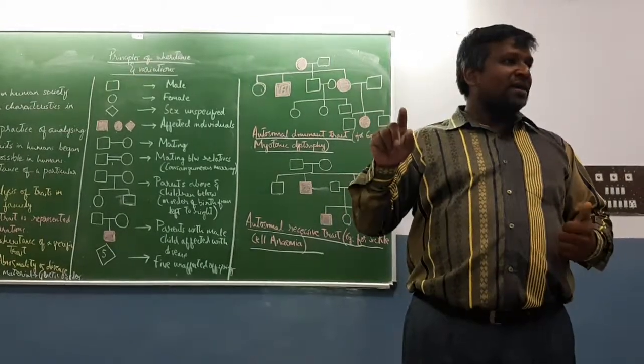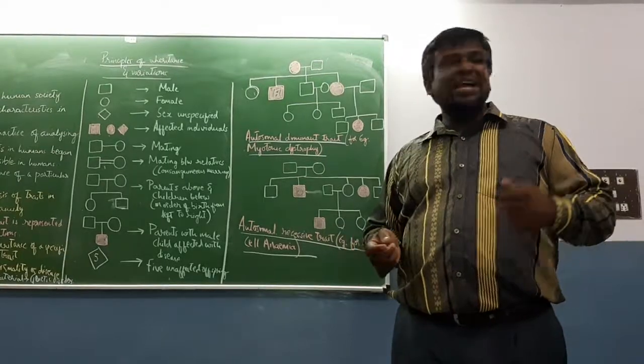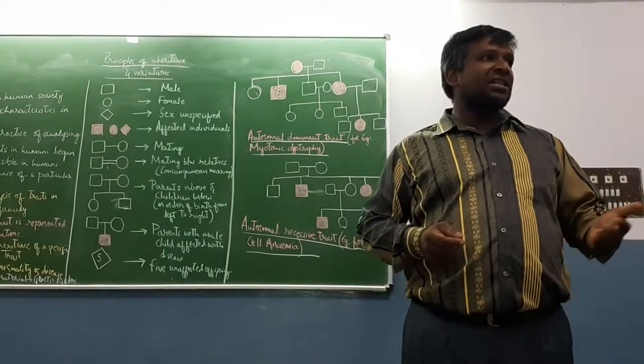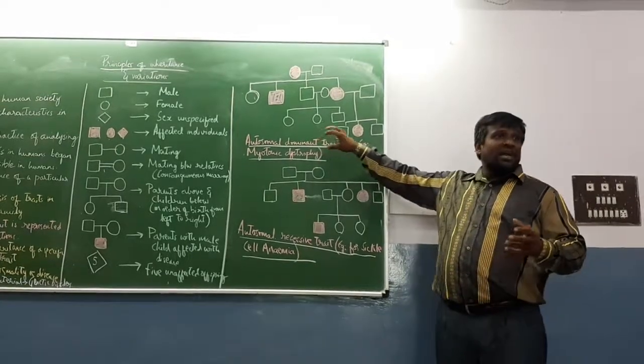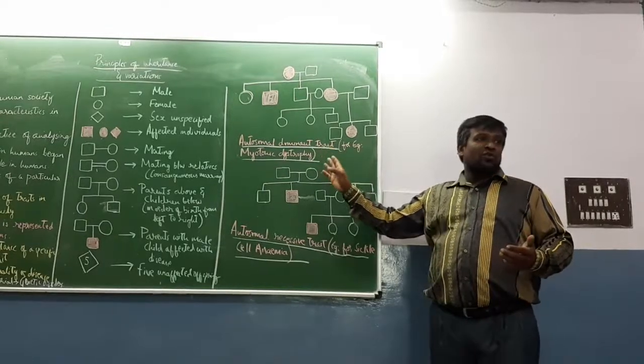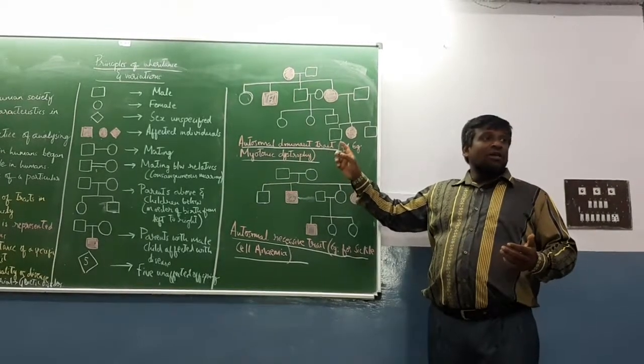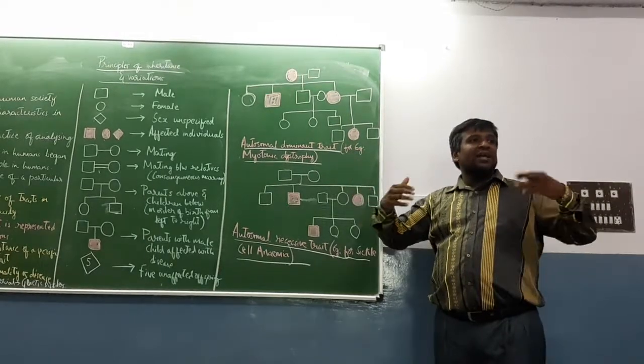In males, allosomes are XY. In females, it is XX. We have discussed sex determination in the previous class. Now, autosomal dominant trait - they have taken an example of myotonic dystrophy. It is an autosomal dominant trait.